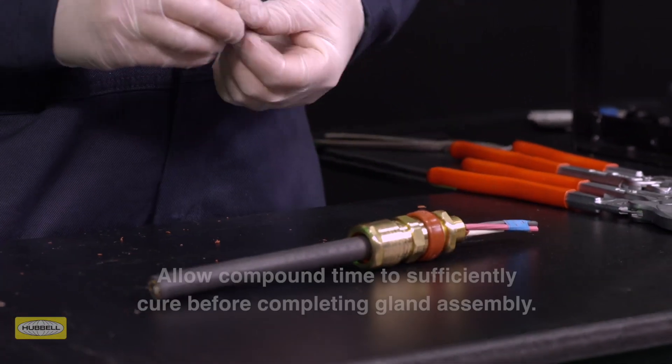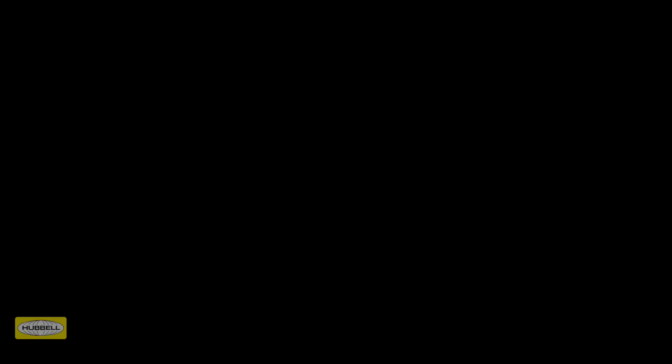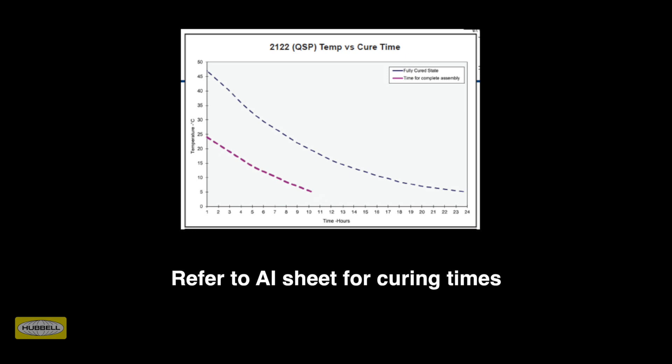Roll the surplus compound and seat it on the cable. Once this is cured, the cable gland is ready for installation. Refer to the Hawk Seal or QSP packaging or assembly instructions for curing times.